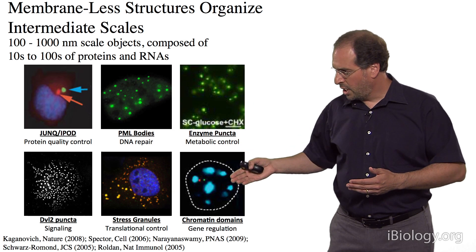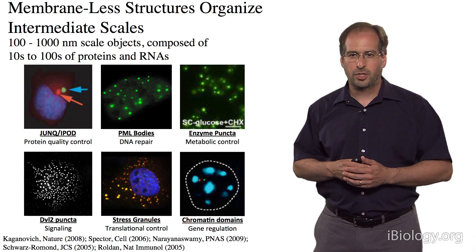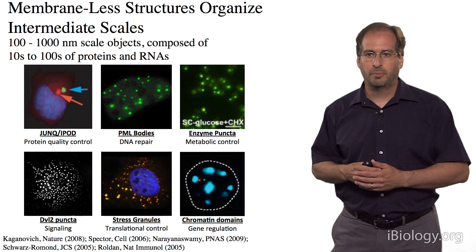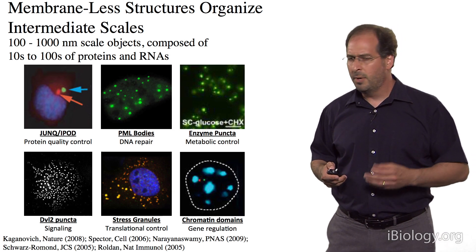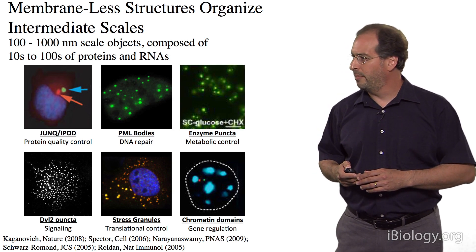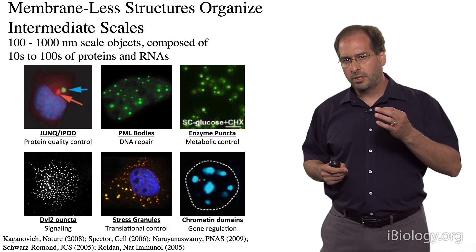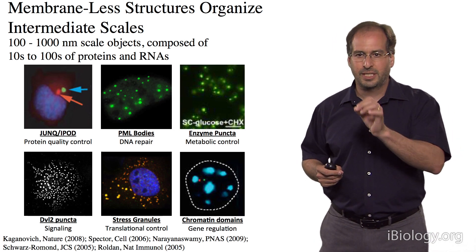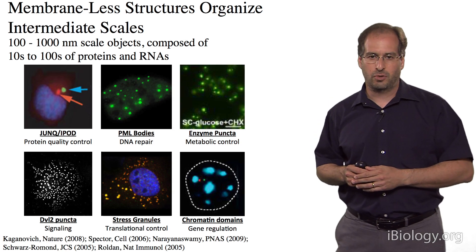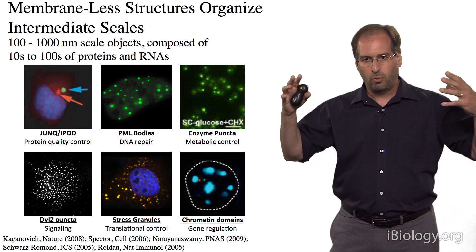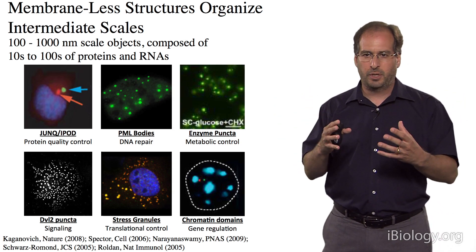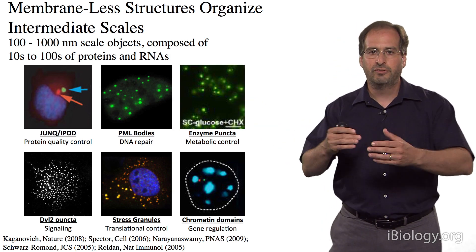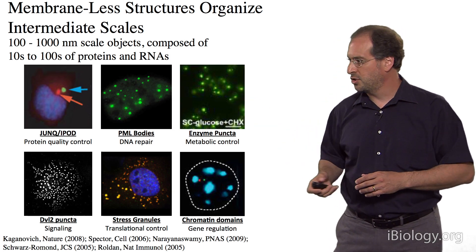There are also numerous structures in the nucleus involved in organization of chromatin, believed to play an important role in gene regulation. These micron-sized membrane-less structures are found really throughout all of eukaryotic biology. But we understand very little about their functions — we know a lot about the individual molecules contained within these structures, but we don't understand how those molecules are brought together into micron-sized structures to impart new functionality to cells.